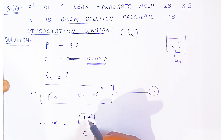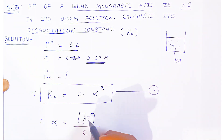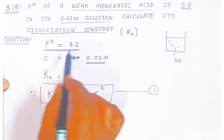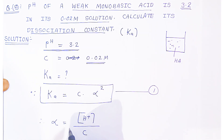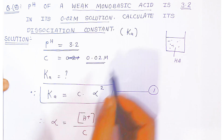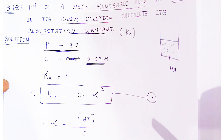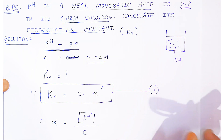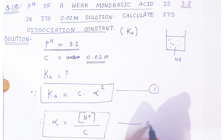To find the concentration of H⁺, we use the given pH of 3.2. Once we calculate [H⁺] from pH, we put that value into the alpha formula to get the degree of dissociation. Then we substitute alpha into equation number one — Ka = C·α² — to find the dissociation constant.